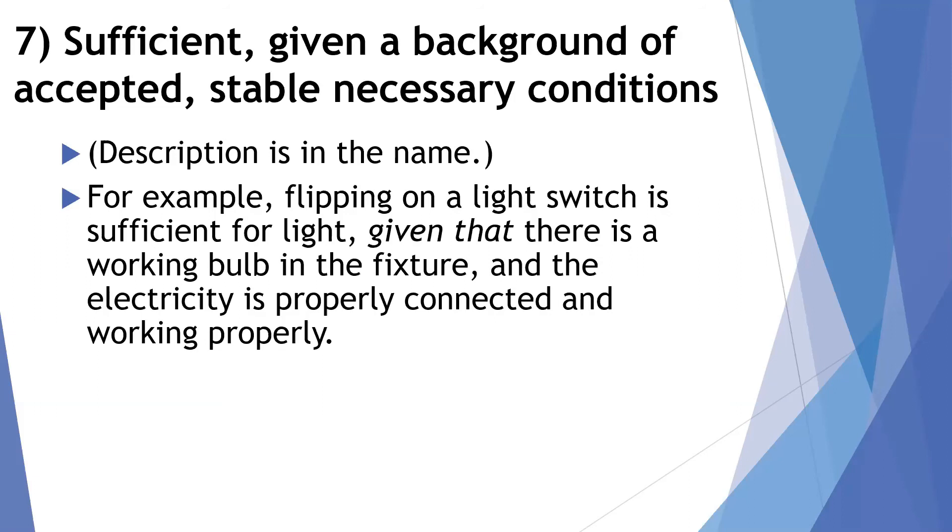An example here would be flipping on a light. So, you flip the light switch, and the light comes on. You could call it sufficient, but, you know, that doesn't happen every time. Sometimes the bulb's burned out, or sometimes there's a power outage. So, you have to assume there's these accepted, stable, necessary conditions that are present. So, flipping the switch is sufficient for light, given that we have a working bulb in the fixture, and the electricity is properly connected and working properly.